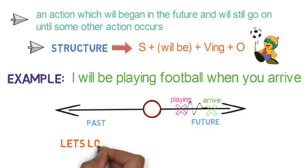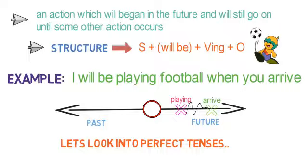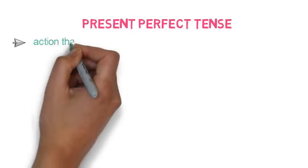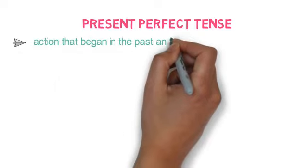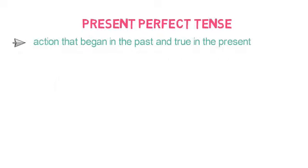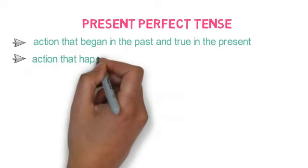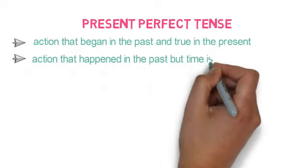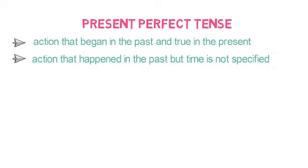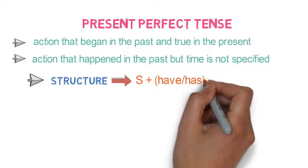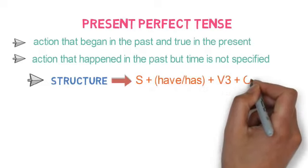First, we will look into perfect tenses now. Present perfect tense refers to an action that began in the past and is still true in the present, or it also refers to an action that happened in the past but time is not specified. Structure of it is: subject + have/has + verb's third form + object.